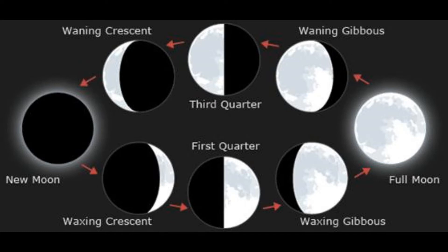People ask about what the different phases of the moon are, and I'm about to show you that right here. As you can tell, we have a waning crescent, new moon, waxing crescent, first quarter, waxing gibbous, full moon, waning gibbous, and third quarter.